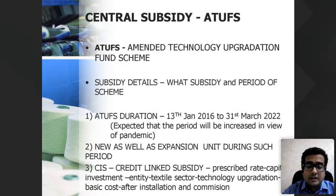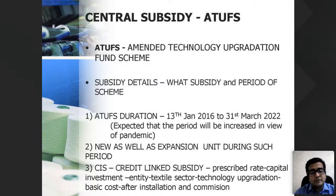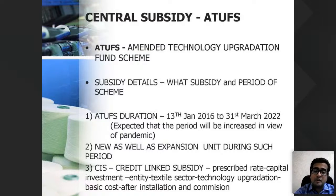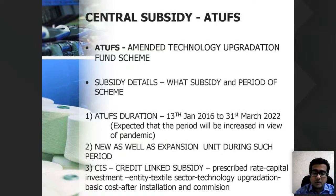Under ATUFS the subsidy is called Credit Linked Subsidy. The name is 'credit linked' because only units that have taken a loan from banks are eligible. It is at a prescribed rate on the capital cost — specifically on the basic cost of the machine for technology upgradation only. If you install a lower-technology machine than prescribed by ATUFS, this subsidy won't be applicable.